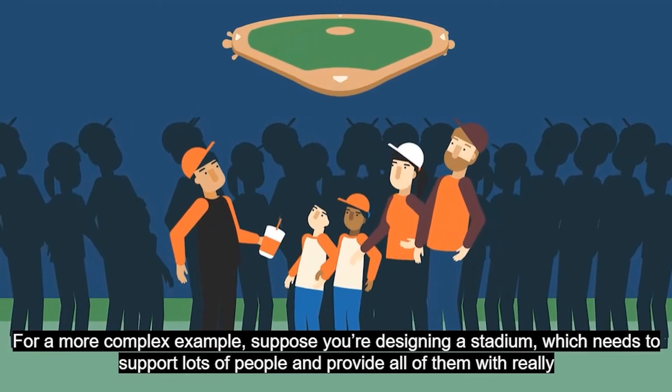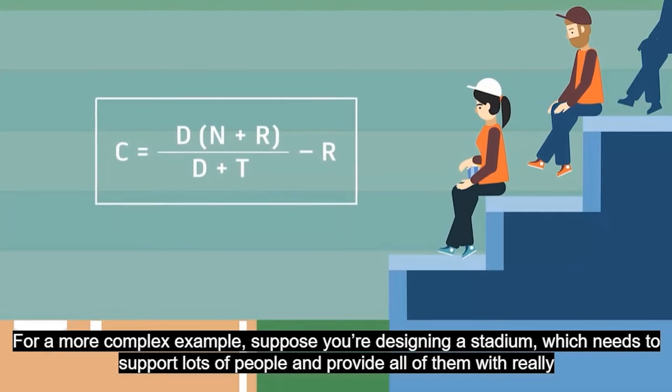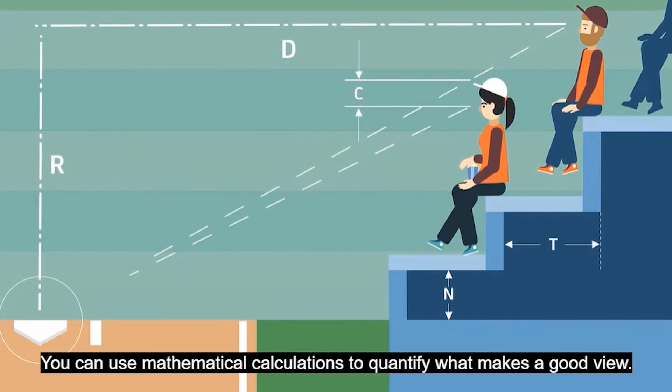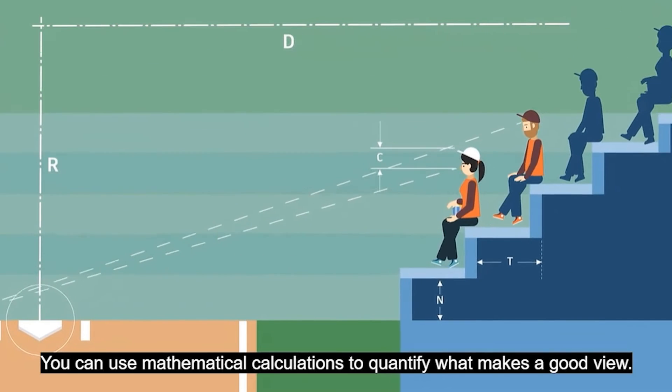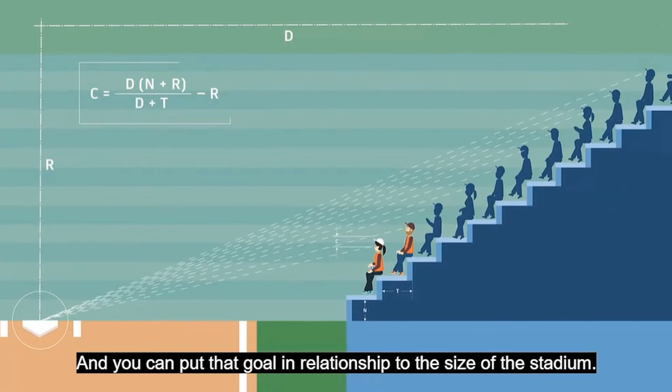For a more complex example, suppose you're designing a stadium which needs to support lots of people and provide all of them with really good views. You can use mathematical calculations to quantify what makes a good view, and you can put that goal in relationship to the size of the stadium.